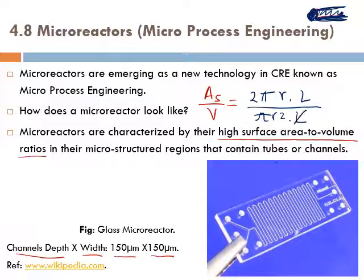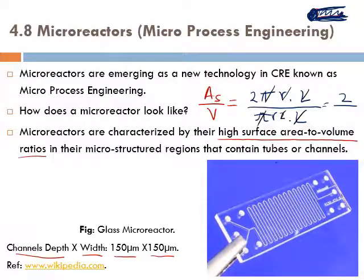Let's cancel out things together. The L cancels with L, r cancels, and π cancels with π. You are simply left with 2 divided by r. So the surface area per volume equals 2/r. The smaller the radius becomes, the larger the surface to volume ratio is.